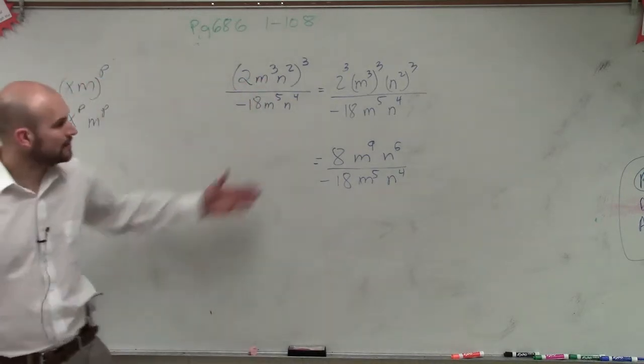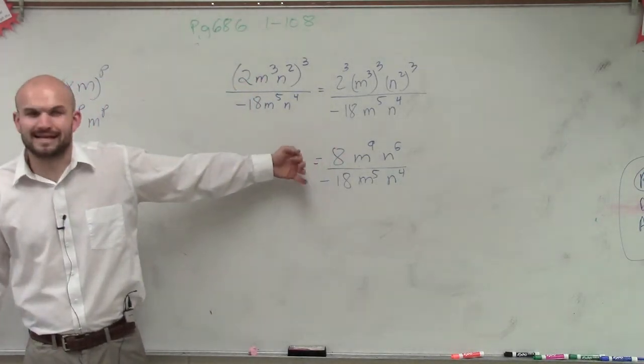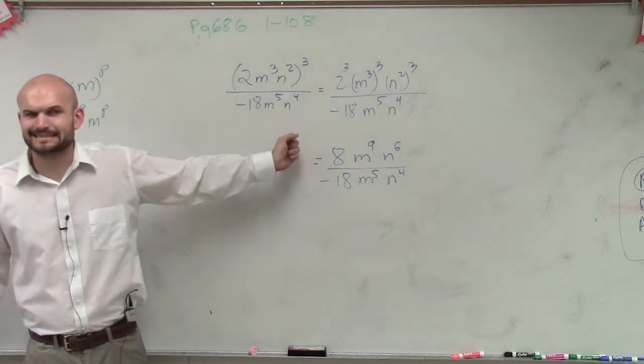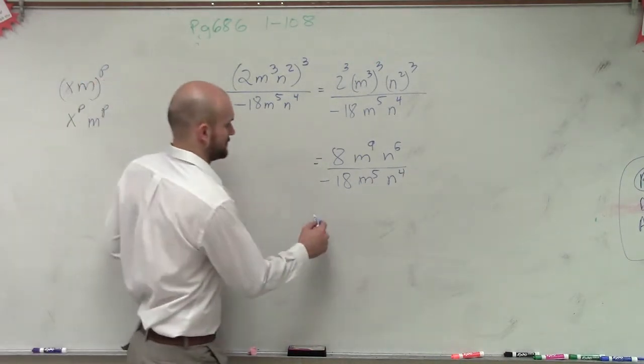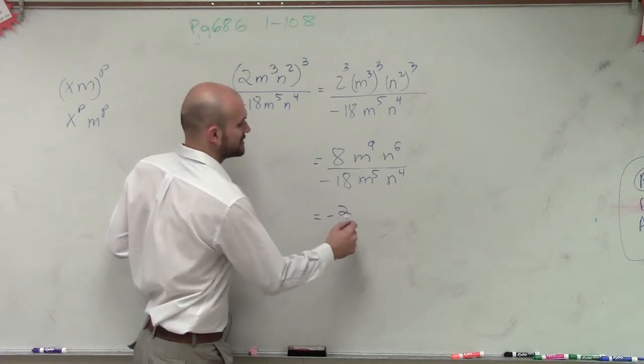So now, can we reduce 8 over 18? What number divides both into 8 and the 18? 2 ninths. And that's a negative 2 ninths.